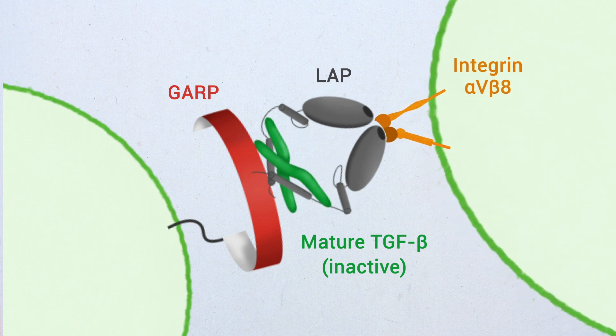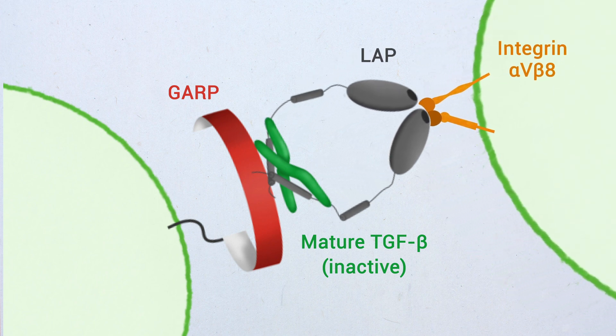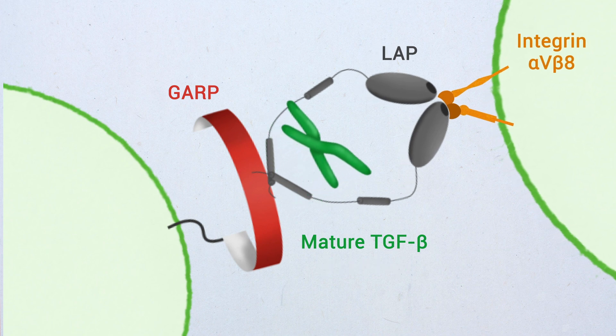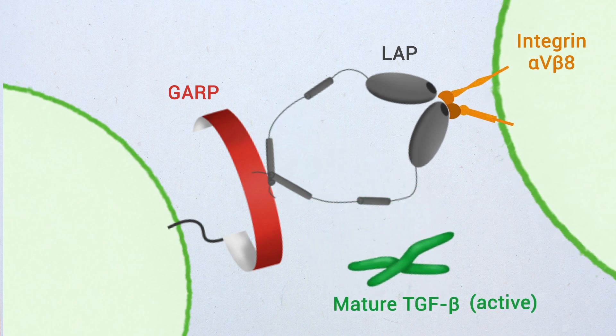Finally, tensile force transmitted by integrin alpha-v-beta-8 to LAP leads to the release and activation of mature TGF-beta.